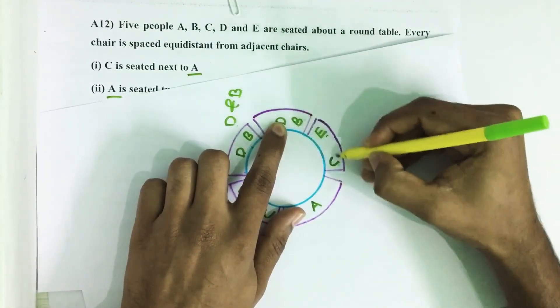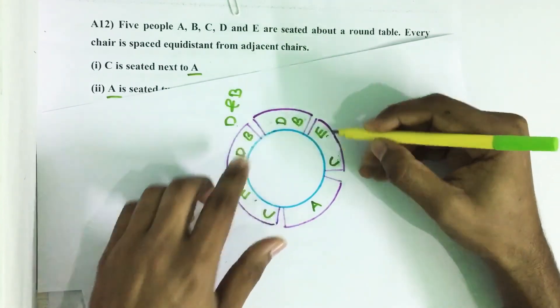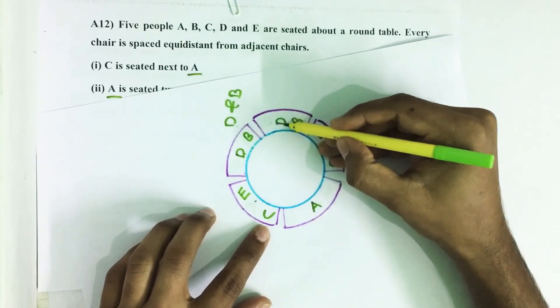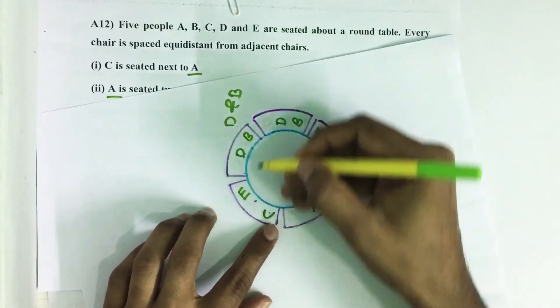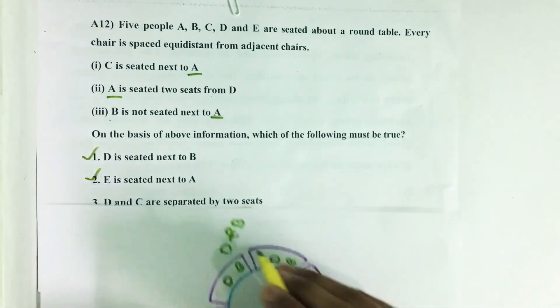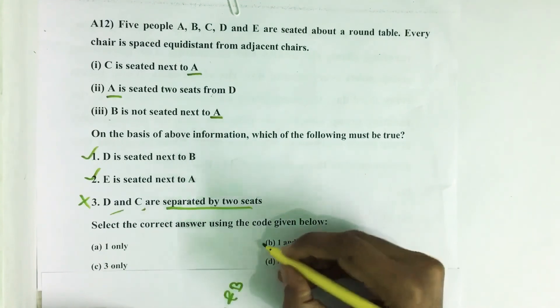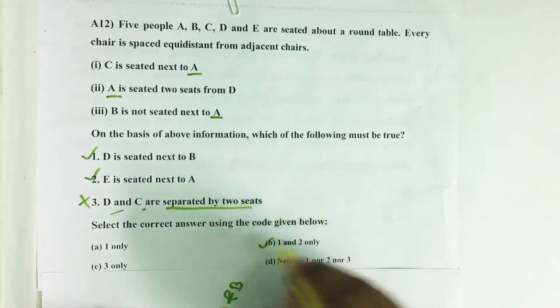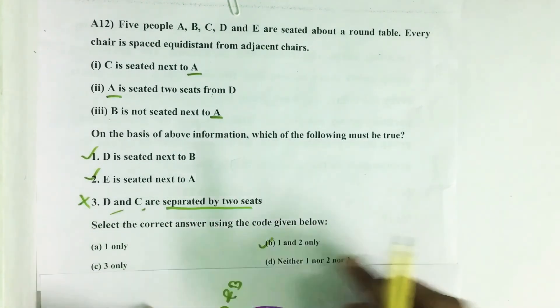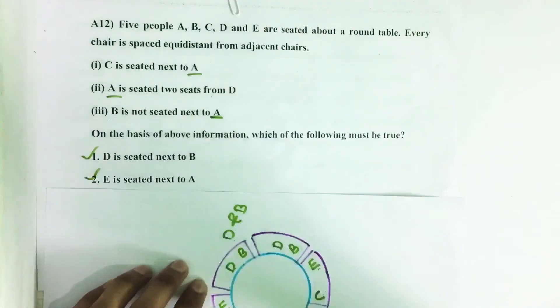Then there is no separation seat in between D and C. Another possibility is D is here and C is here. Then here there is only one seat in between D and C. So this statement is false.